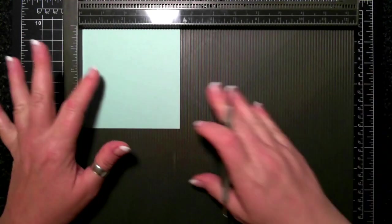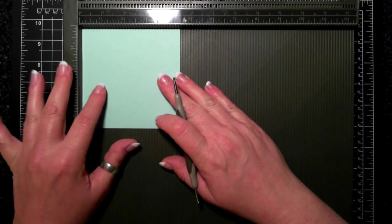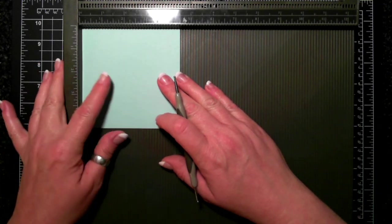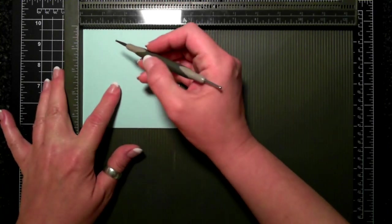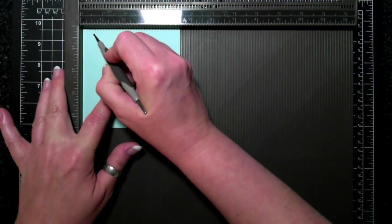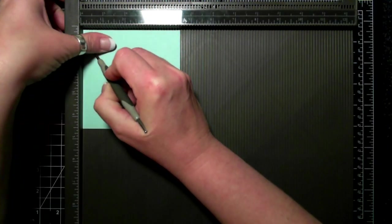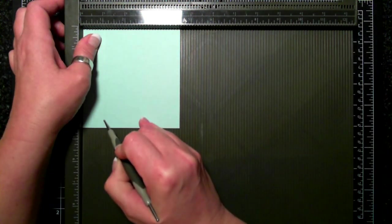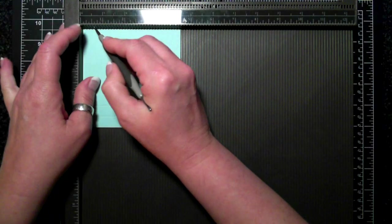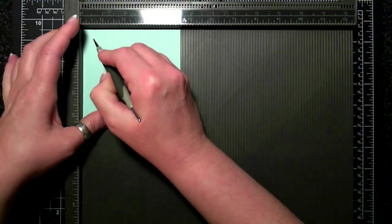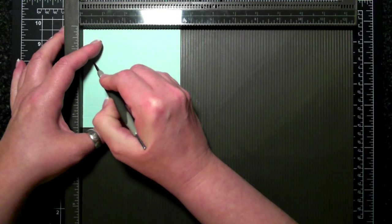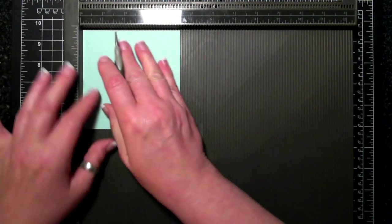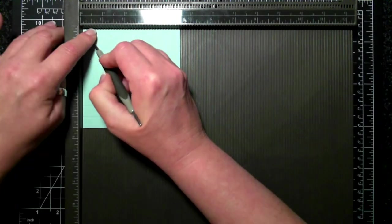This is going to be the drawer. I'm starting off with a four and a half by four and a half square. This is pool party, and I'm going to score at a half of an inch and one inch on all four sides.